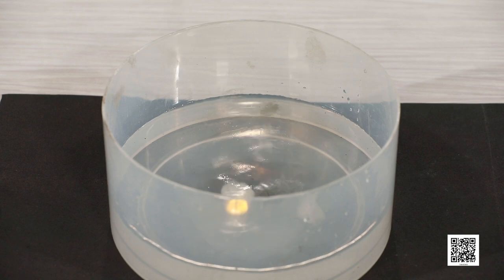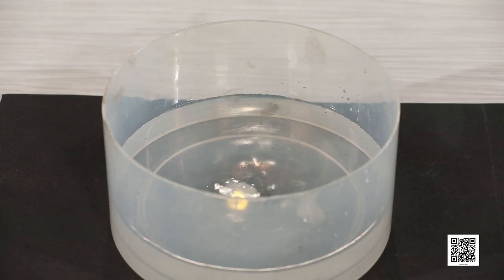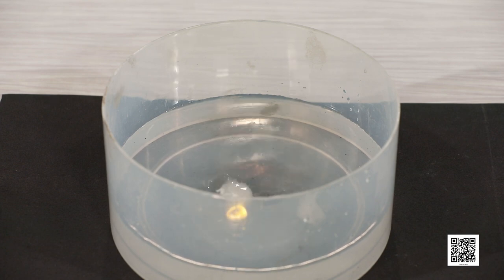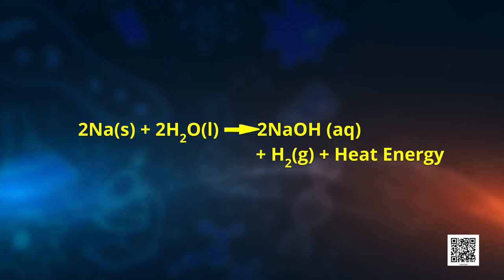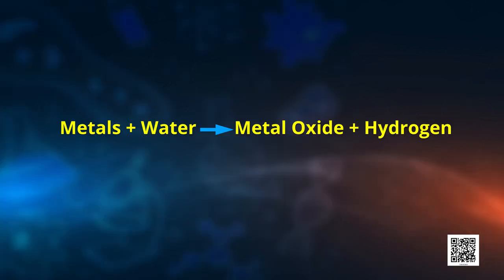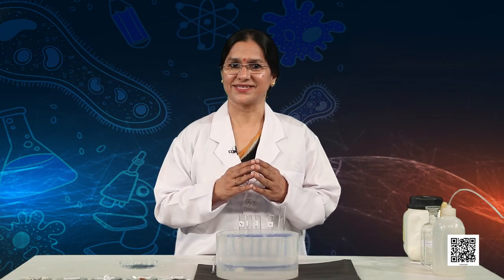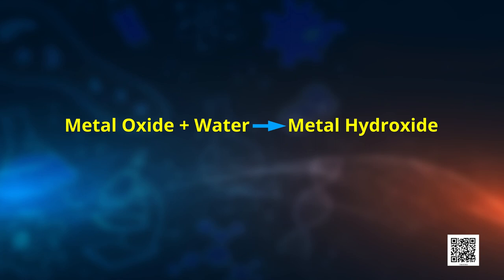Metals like sodium and potassium react so violently with cold water. The reaction is so violent and exothermic that the evolved hydrogen has immediately caught fire — you can see it yourself. That is why this reaction has to be performed only by the teacher. Can you write the chemical equation for the reaction of sodium with water that you just observed? Always remember: metals react with water and produce a metal oxide and hydrogen gas. These metal oxides then react with water to further form metal hydroxide.